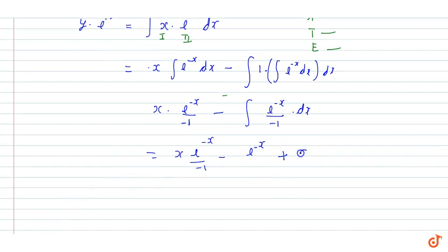And we get a constant c because we are doing indefinite integration, and it is equal to y times e to the power minus x.